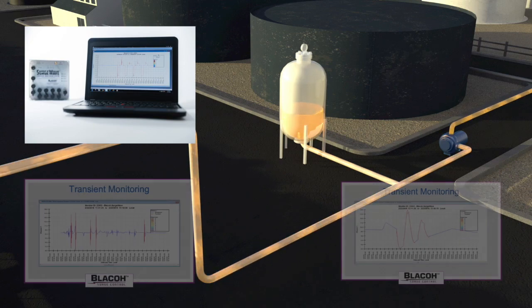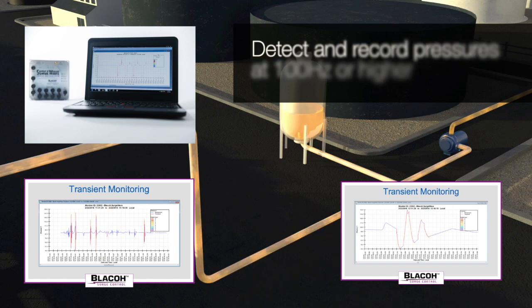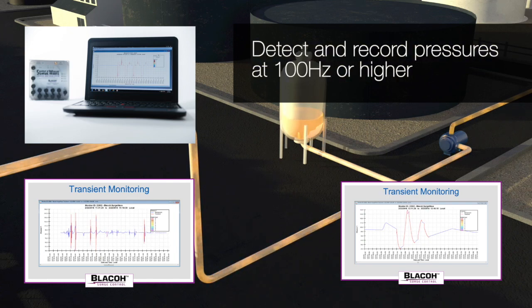Blago's surge wave transient monitoring systems can detect and record pressures at 100 Hz or higher, allowing critical systems such as loading terminals to have early detection and prevention of pressure problems.